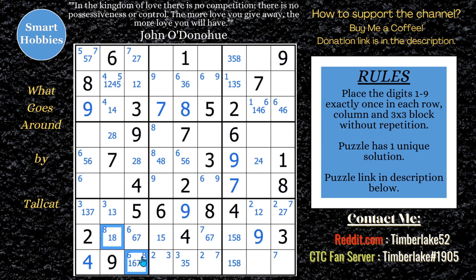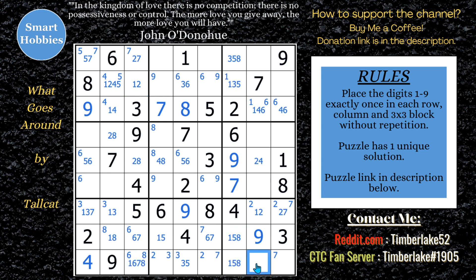I see a finned X-wing now on the ones. The ones are limited to two spots in column three, and three spots in column seven — the extra spot being the fin. Either this fin cell is a one, making it impossible here, or if it's not a one, you'd have a standard X-wing pattern. In either case, this particular cell cannot be a one. I can eliminate a one from there, though the direct impact may be limited.